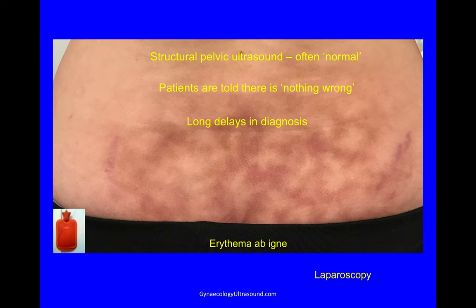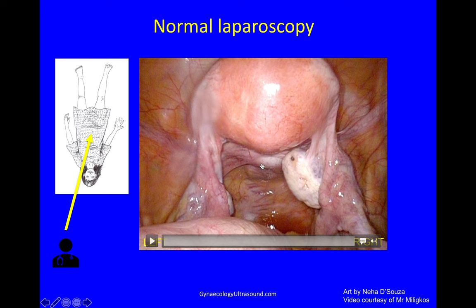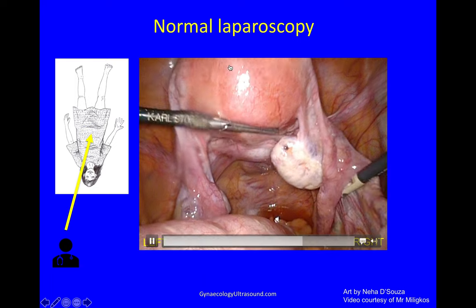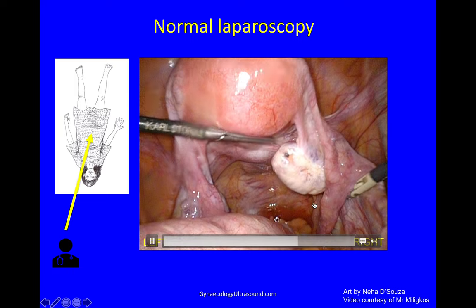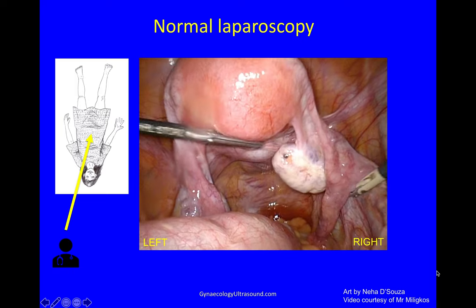Laparoscopy therefore is a mainstay of diagnosis. To help you understand what a normal laparoscopy looks like, here is an image of a woman — laparoscopy is where a camera is inserted through your belly button under general anaesthetic and then the surgeon looks toward the feet. This is the view you get: you can see the back of the uterus, the ovary, the fallopian tubes, and the pouch of Douglas — it's all nice and clear, and that's the bowel just at the back. So a nice clear pelvis.